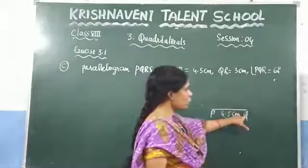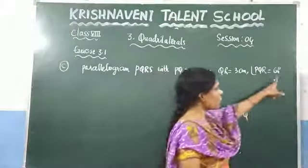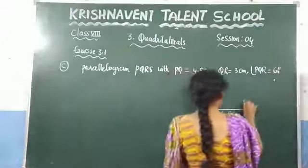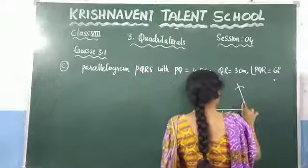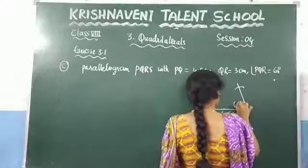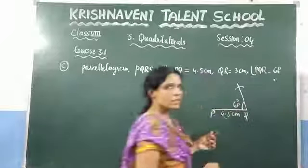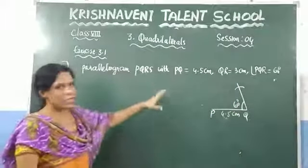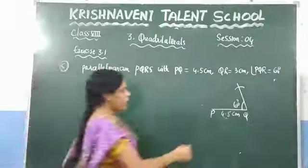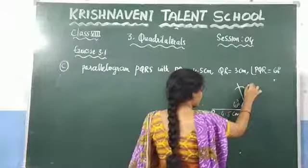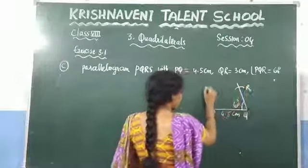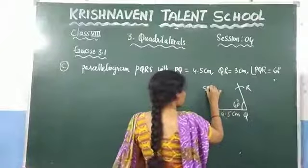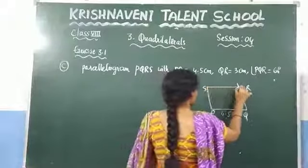At point Q, you need to draw an angle of 60 degrees. Here we are drawing an angle of 60 degrees. This is parallelogram PQRS — it will be PQ, this should be R, and somewhere you need to draw here. This is the parallelogram we need to draw.